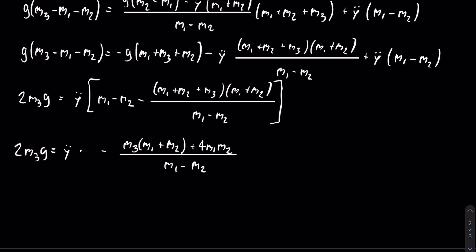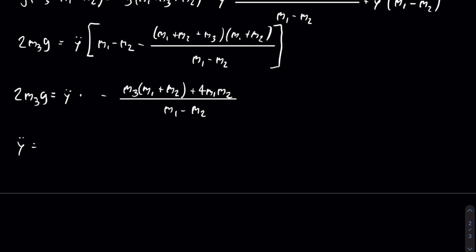Next, I'm just going to divide both sides by that fraction on the right, and then I will rewrite it a bit just to make it a little bit nicer. If you want, you can check this. It's equal to the equation above. So here is the equation for y double dot in terms of just g and each of the m's.